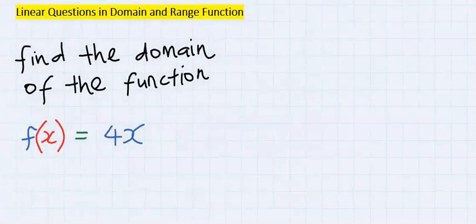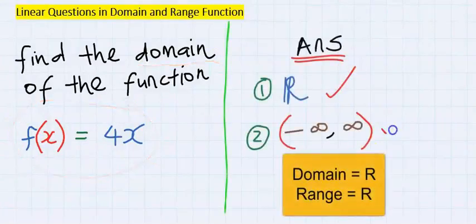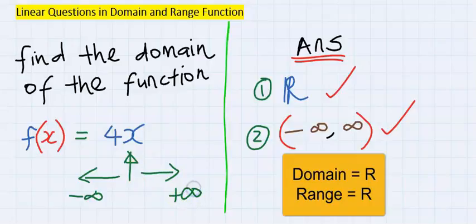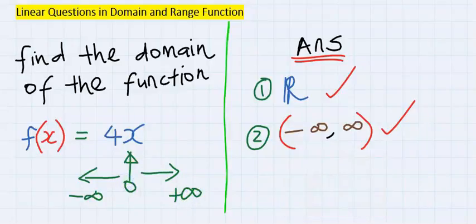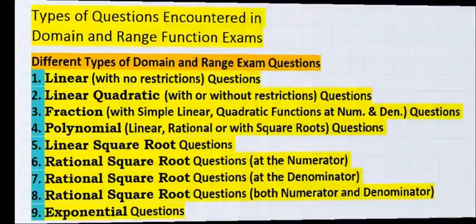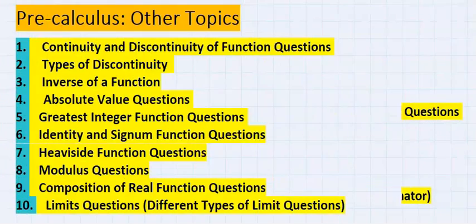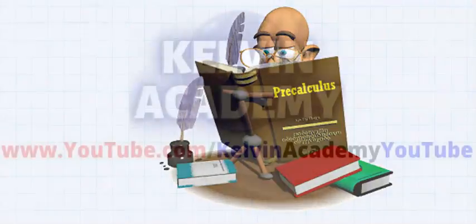Consider this question: find the domain of this function. The answer is simply all real numbers — ℝ — because there is no restriction for x, both towards negative infinity and positive infinity, including zero.